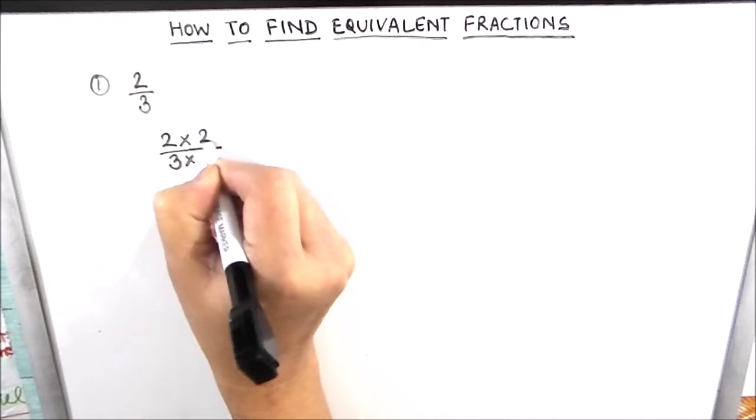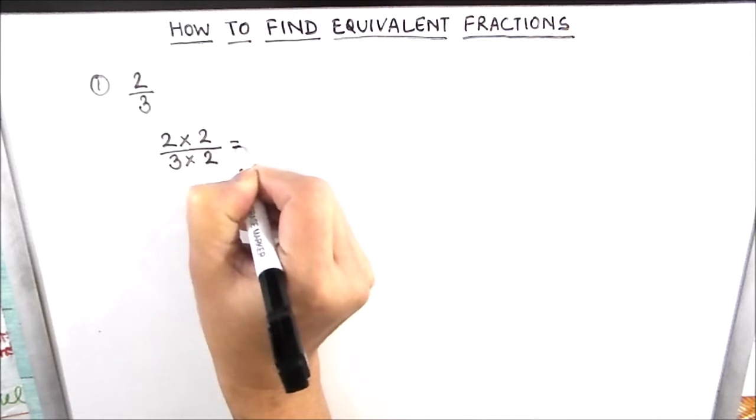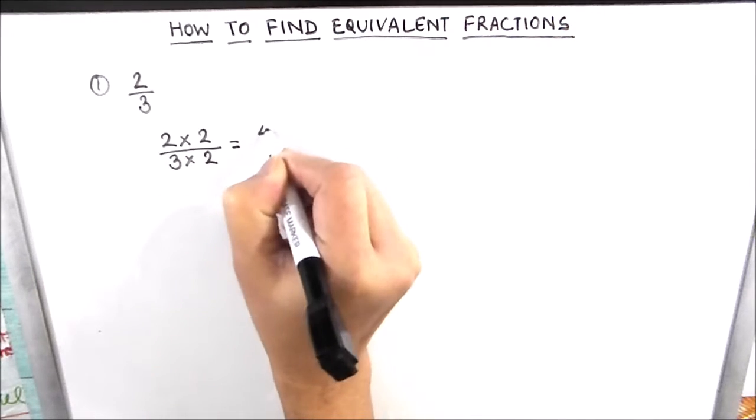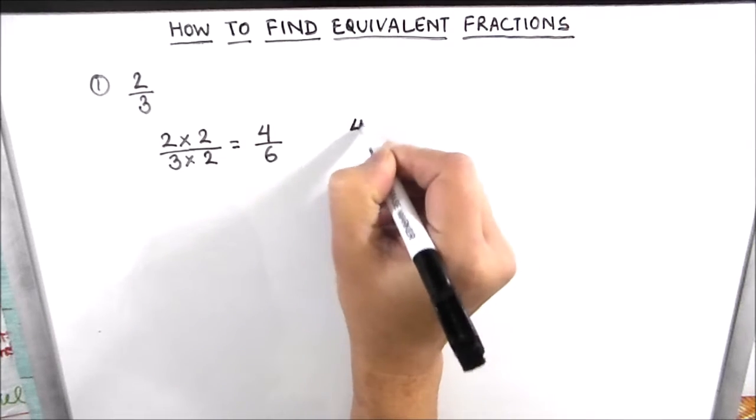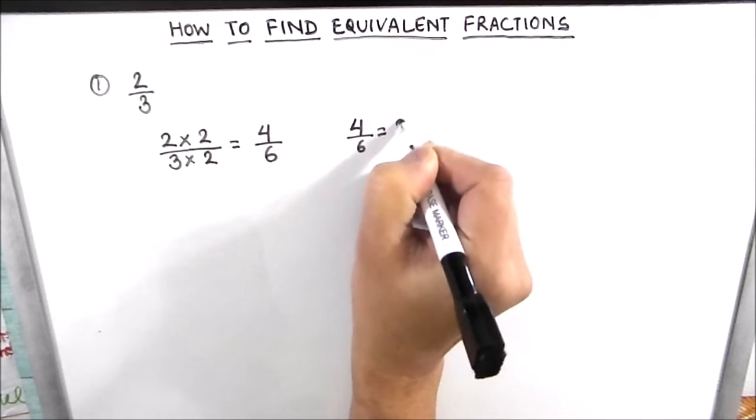So let us take 2 to multiply and divide this fraction. So 2 times 2 is 4 and 2 times 3 is 6. So 4 by 6 and 2 by 3 are equivalent fractions.